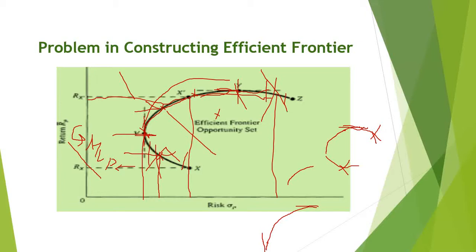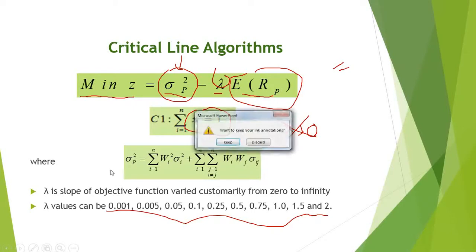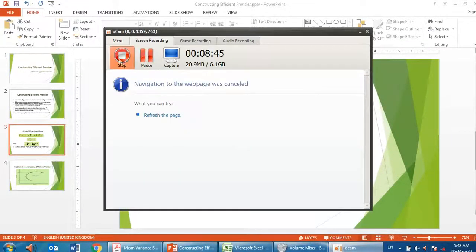If you minimize risk using different lambda values — which are all positive — each lambda value represents a slope on the efficient frontier. When the line is parallel to the x-axis, the lambda value is close to zero, corresponding to the global minimum variance point. When the line is steep, lambda approaches infinity at the top of the frontier. By using different lambda values, we can calculate these different points and connect them to trace out the efficient frontier.